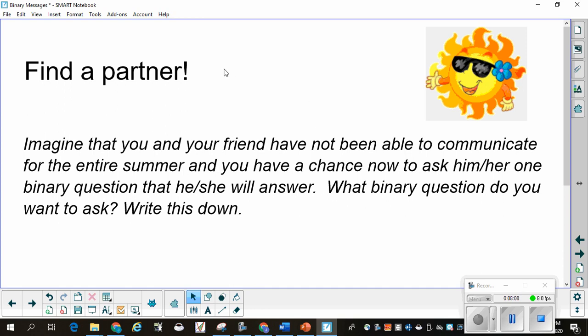If we're virtual, I will be assigning you partners because I have to set up your breakout rooms. If we're in person, then I would be assigning you a partner. You want to imagine that you and your friend have not been able to communicate for the entire summer. And you have a chance now to ask him or her one binary question that he or she will answer. What binary question do you want to ask? Just stop and think about what's something that you could ask somebody about their summer. Pause the video and write down what you might ask.